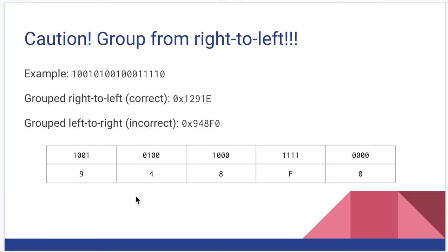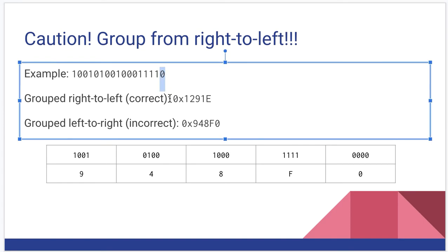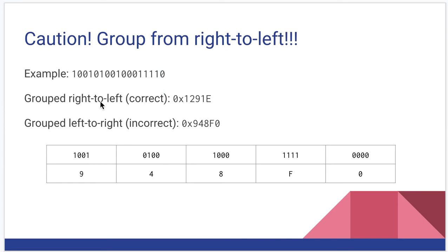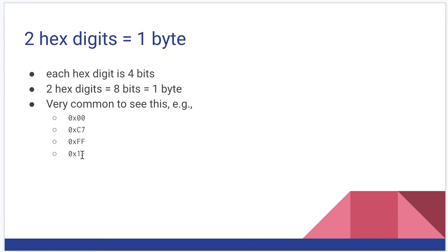But here's one of those cautionary situations. We have 1011, 0100, 100, 1111, and we have an extra zero. If we convert this based on a right-to-left grouping, we get hex 1291E. That's correct. If we started grouping from the left to the right, we get 948F0, which is not correct.